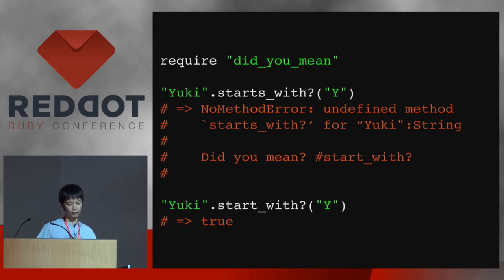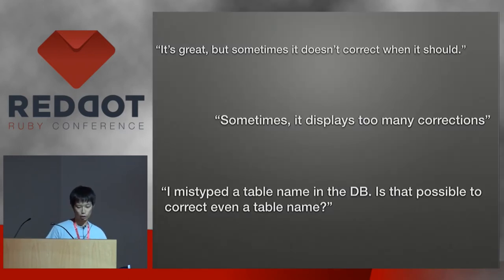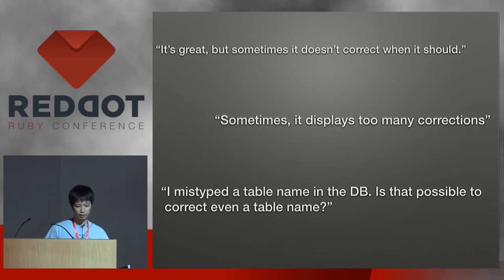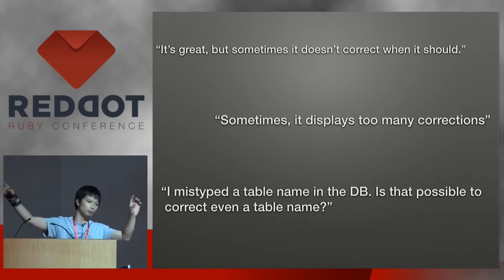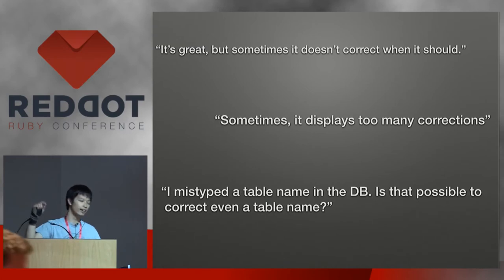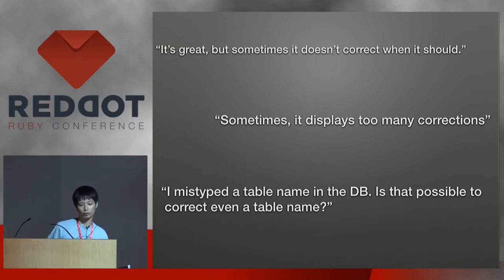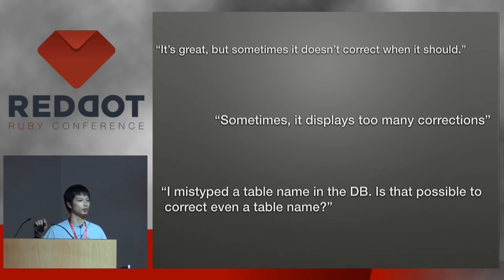Since last year I started getting many questions about this gem. One of them is: it's great, but sometimes it doesn't correct when it should. For example, you typed a long method name and you just don't remember the correct one, and then DidYouMean fails to find it. And sometimes it displays too many corrections because it's not super smart.